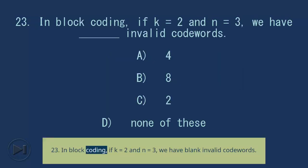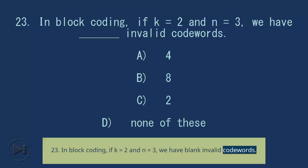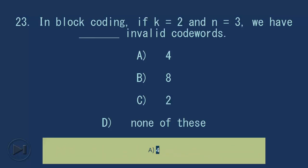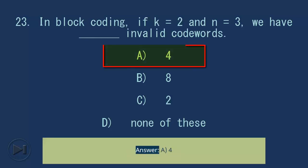Question 23: In block coding, if k equals 2 and n equals 3, we have blank invalid code words. A) 4, B) 8, C) 2, D) none of these. Answer: A, 4.